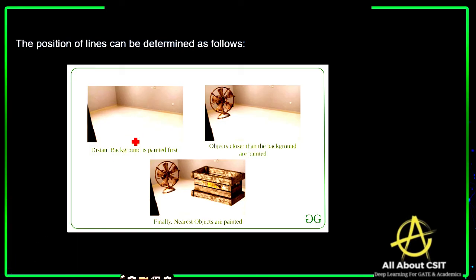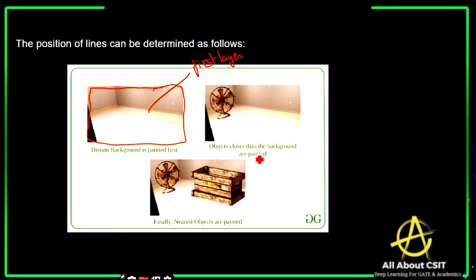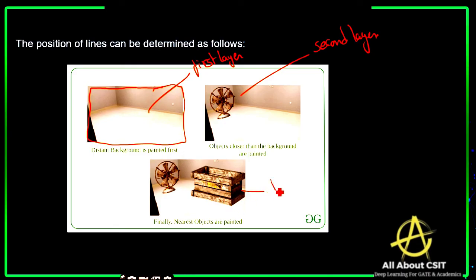Looking at the picture: the distant background is painted first — this is the first layer. Then objects closer than the background are painted — this is the second layer. Finally, the nearest objects are painted — this is the third layer. For example, the fan is the farthest object, and the box is the closest one. This is how the painter's algorithm follows the layering technique.